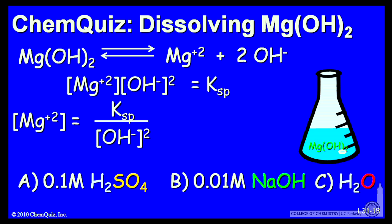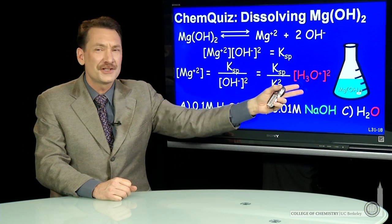But in water, H₃O⁺ times OH⁻ is always Kw, 10⁻¹⁴. So I can solve for OH⁻ in terms of H₃O⁺ and Kw. If I do that, then I have Kw squared times the acid concentration. So this is just some math.